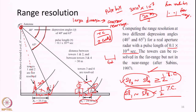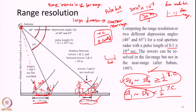We also saw an example in the last class where the pixel length in the near range is 35.5 meters, whereas in the far range it is almost 20 meters. Two towers separated by a distance of 30 meters on horizontal ground will not be resolved in the near range, whereas they will be resolved in the far range. So the range resolution improves as you move from near range to far range — the range resolution becomes finer and finer.